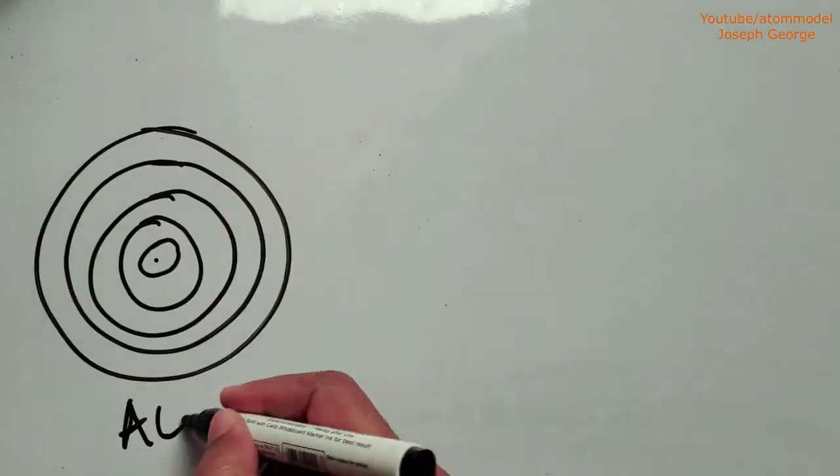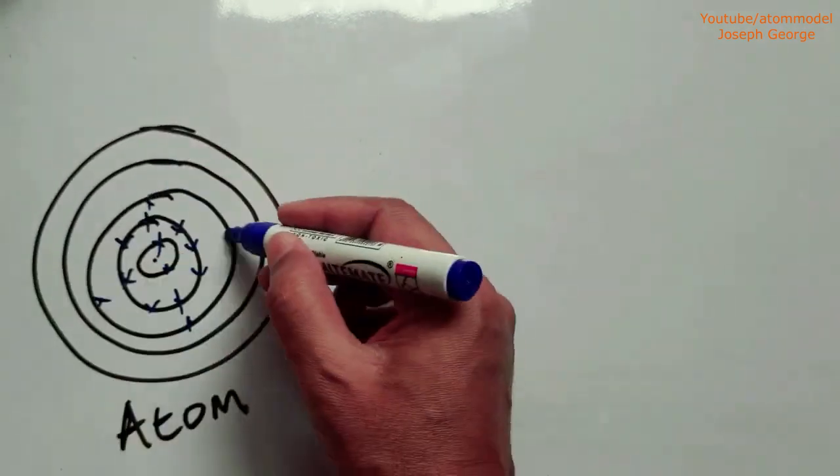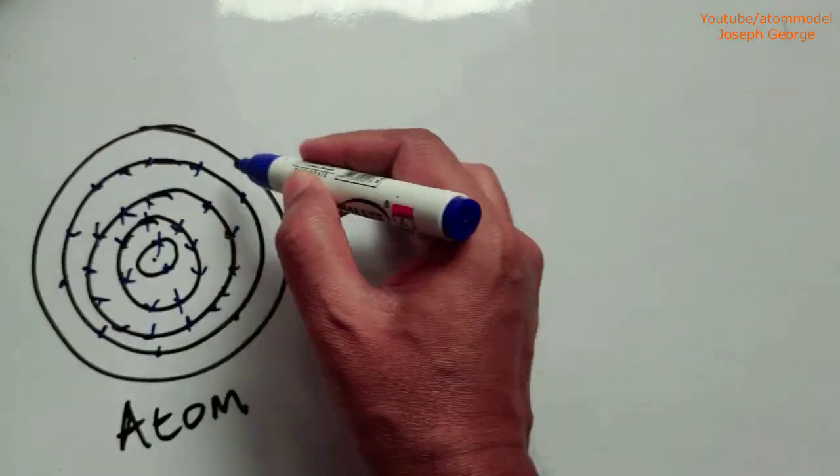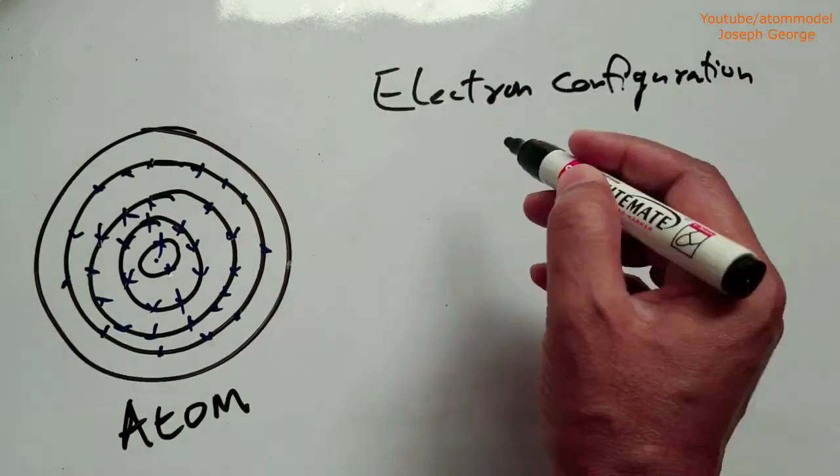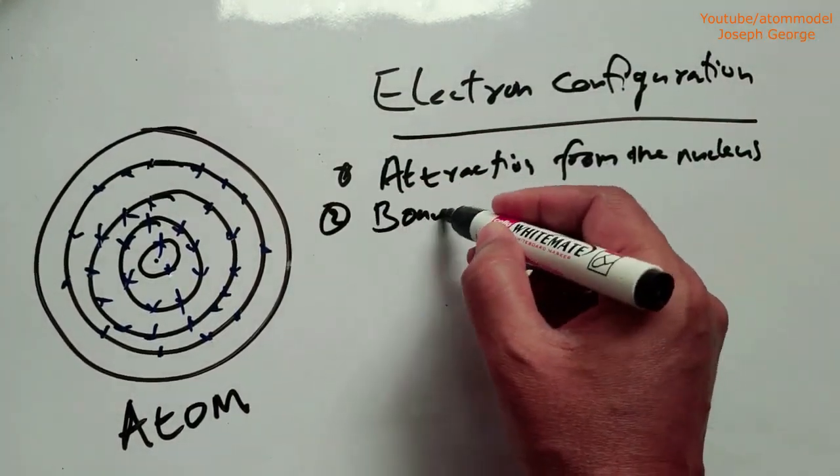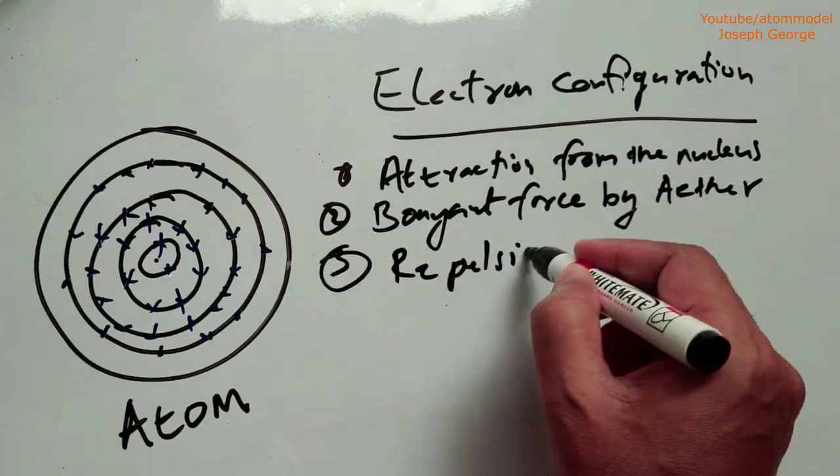From these factors, we can conclude that the electron configuration in a multi-electron atom is determined by three factors: attraction from the nucleus, buoyant force exerted by ether, and repulsion between electrons.